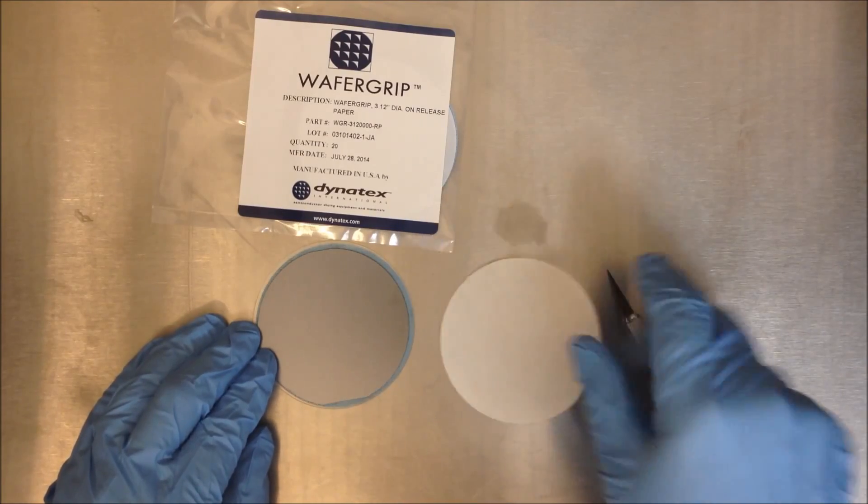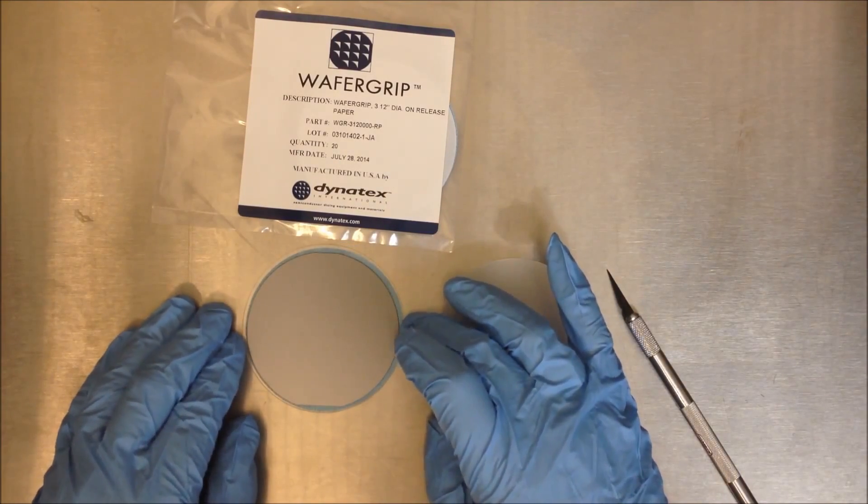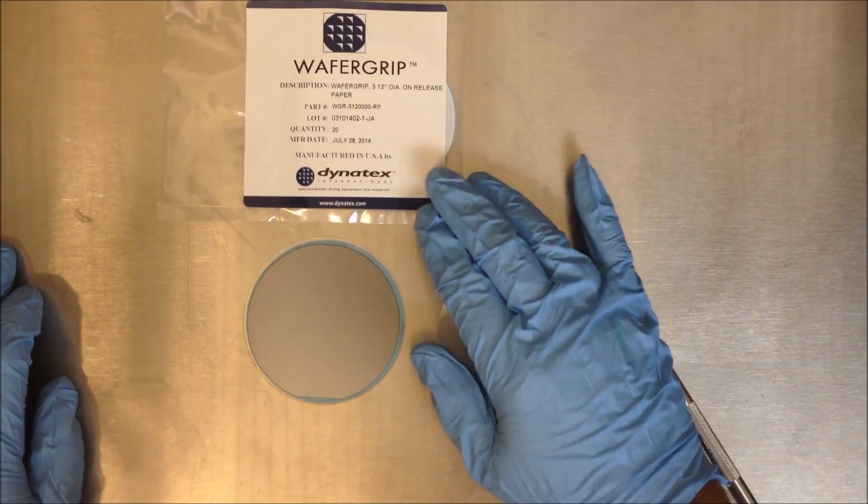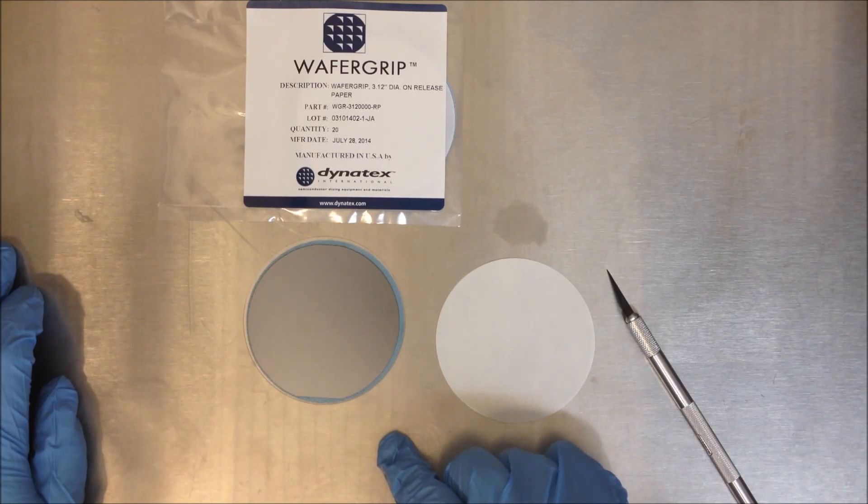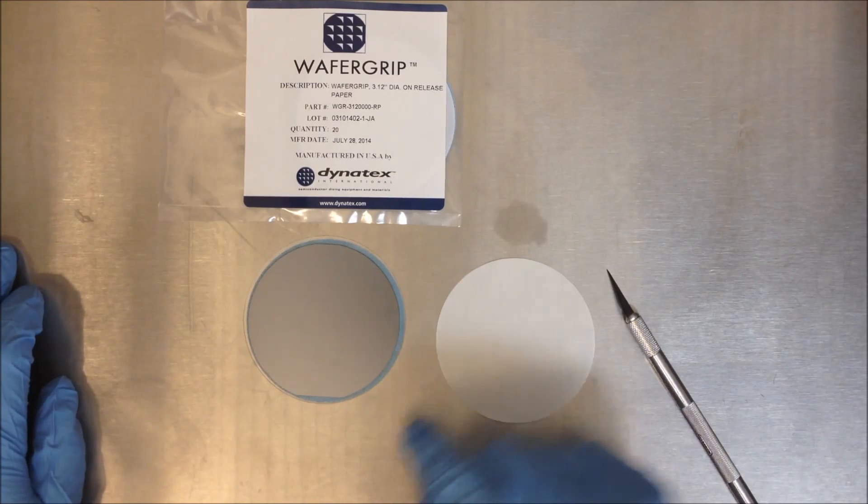Now you will see that we have wafer grip all the way around the wafer. This is a good practice especially for the wafer thinning process because if you don't have a good bond all the way around to the very edge you will get chipping of the wafer.